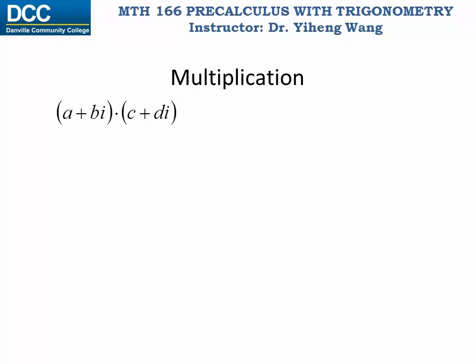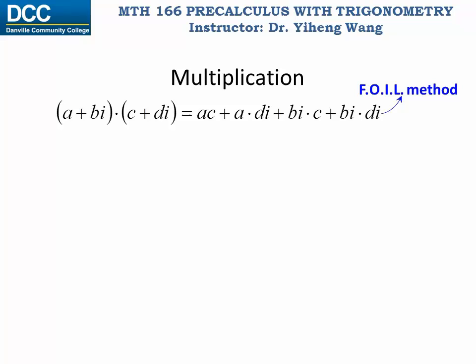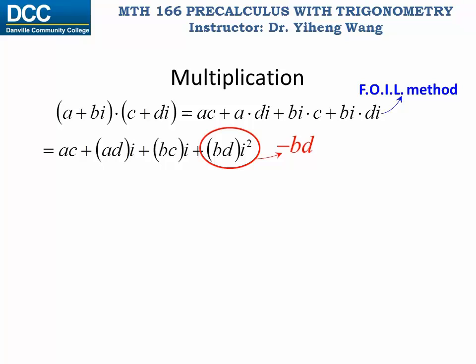For the multiplication of two complex numbers, to find a plus bi multiplied by c plus di, we first use the FOIL method to multiply it out. Notice the last term is bd times i squared. By definition i squared equals negative one, so this last term simply equals negative bd. Grouping the real terms and imaginary terms together in standard form, we get ac minus bd as the real part, and then plus ad plus bc times i as the imaginary part.